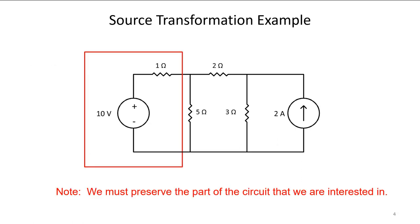To get started, let's first preserve the part that we're interested in. We can't do any source transformations on the 10 volt source and the accompanying one ohm resistor. I'm going to draw a red box around that. I strongly encourage when you work source transformation examples that you always have a box around the part of the circuit which cannot be touched.